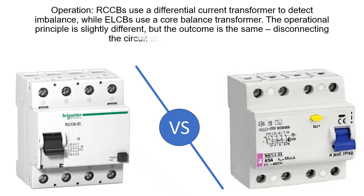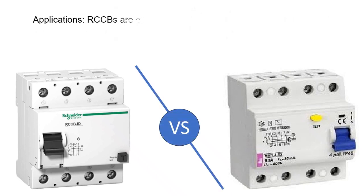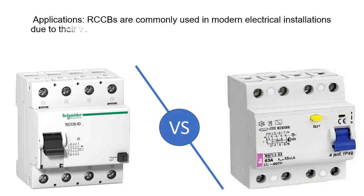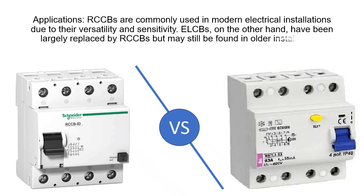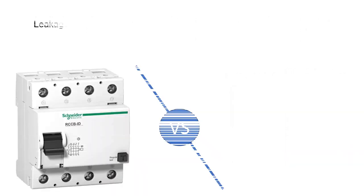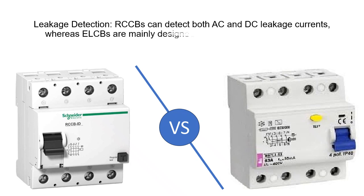Applications: RCCBs are commonly used in modern electrical installations due to their versatility and sensitivity. ELCBs, on the other hand, have been largely replaced by RCCBs but may still be found in older installations. Leakage Detection: RCCBs can detect both AC and DC leakage currents, whereas ELCBs are mainly designed to detect AC leakage currents.